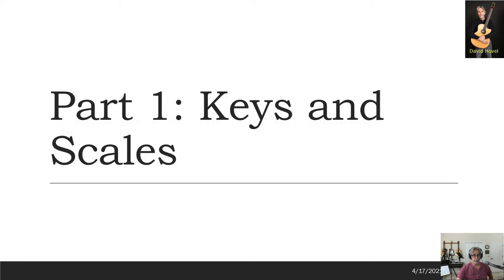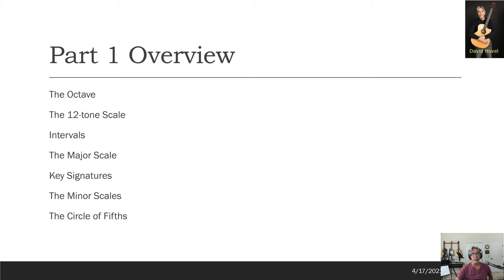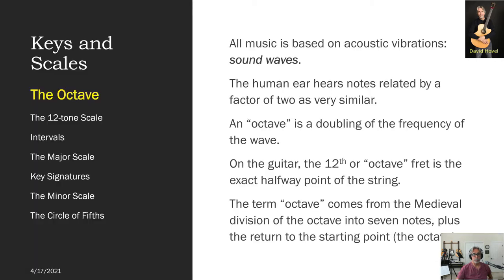Keys and Scales. Here's what we're going to talk about: What is an octave? What is a 12-tone scale? What's the musical definition of an interval? The all-important major scale pattern. How that results in all the key signatures — one for every note in the 12-tone scale. Some basic information on minor scales. And ending up with the circle of fifths.